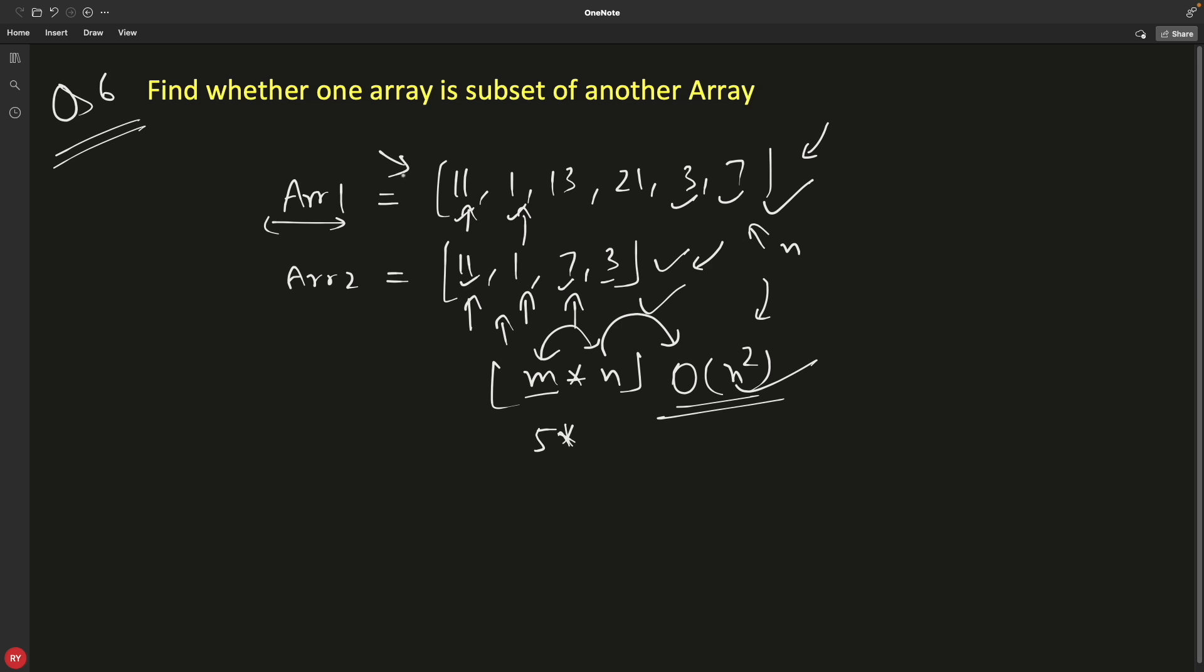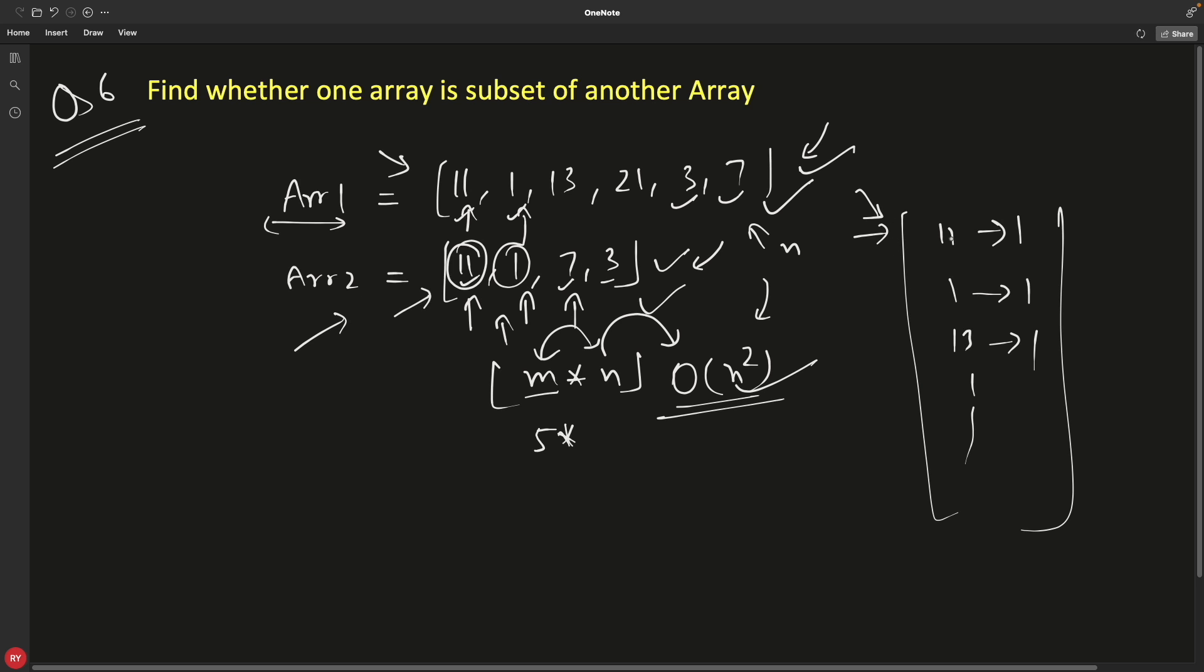Another solution is: let's put all these into a hash map and say that 11 count 1, 1 count 1, 13 count 1. Likewise, we will keep this bigger array into a hash map, and we can say that whenever we iterate over this, we have to check: does this 11 exist here? Okay, fine. If it exists, 1 exists, fine.